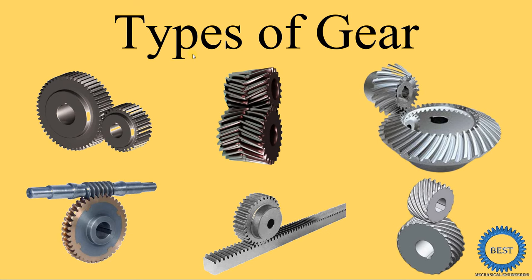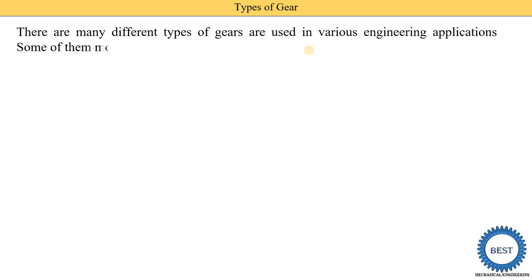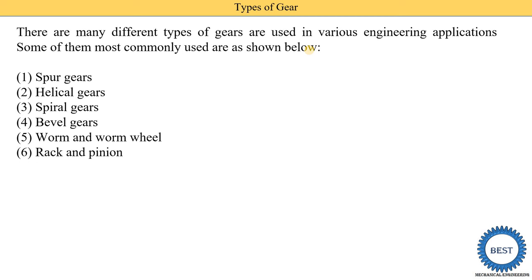In this video I explain various types of gear. There are many different types of gear used in various engineering applications. Six types of gears are commonly used: first, spur gear; second, helical gear; third, spiral gear; fourth, bevel gear; fifth, worm and worm wheel; and last, rack and pinion. Now we will understand all these types of gears in detail.